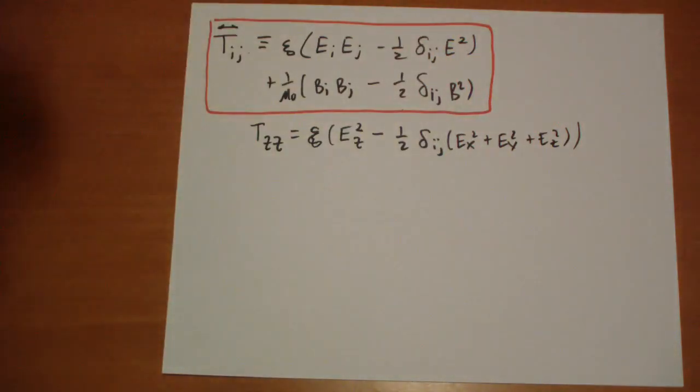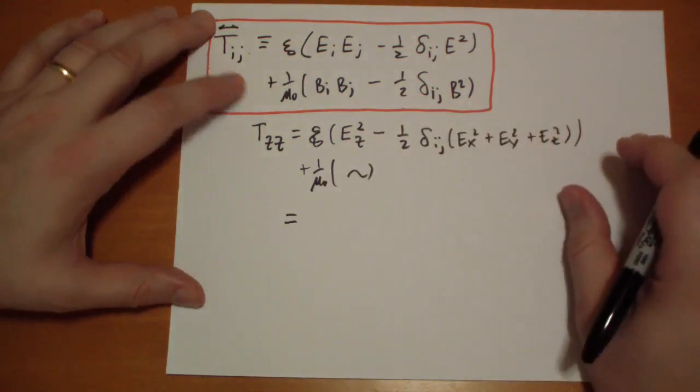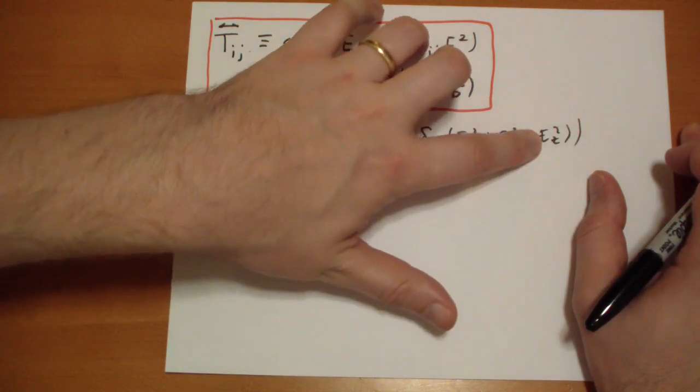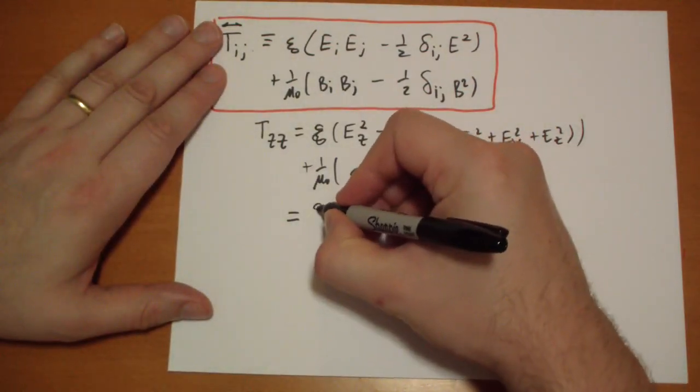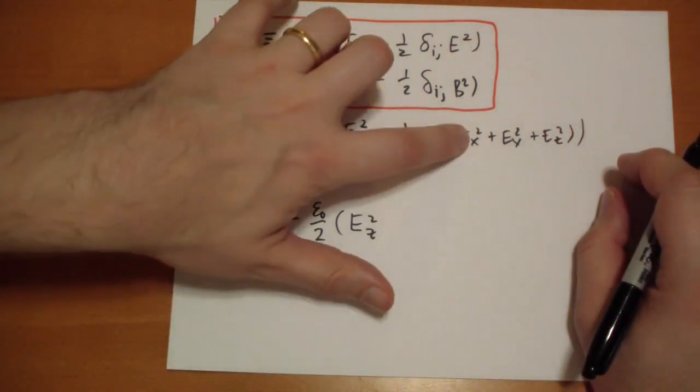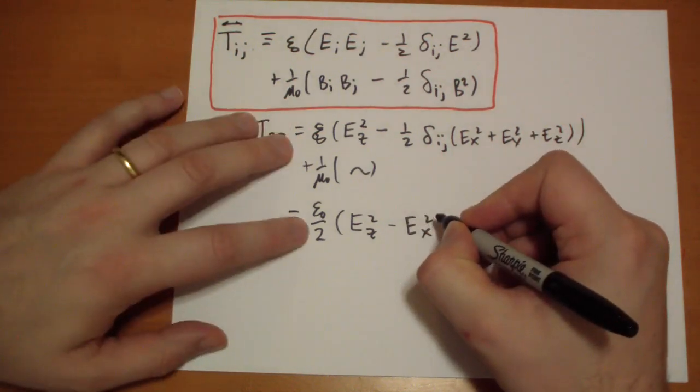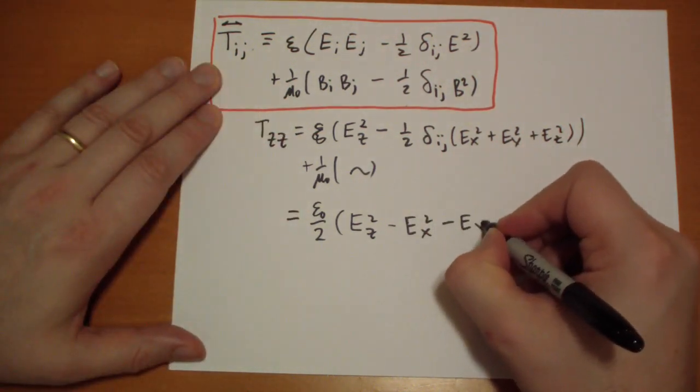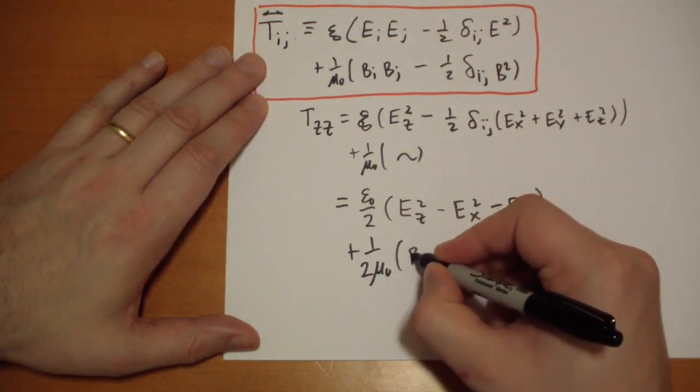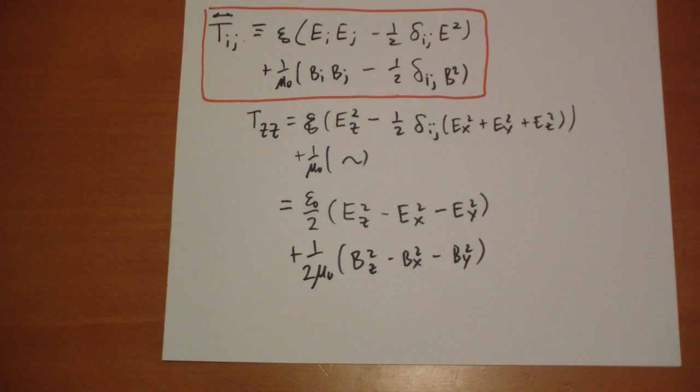And then we get the magnetic term that looks exactly the same. I'm going to simplify this plus 1 over mu-knot the same. Let's simplify. So we have E Z squared minus 1 half E Z squared. So we're left with 1 half E Z squared and then negative 1 half E X negative 1 half E Y. So negative E X squared and we already have the half here minus E Y squared plus 1 over 2 mu-knot B Z squared minus B X squared minus B Y squared. So that's a Z Z term.